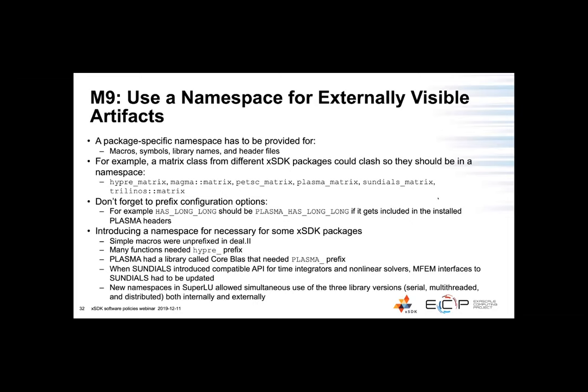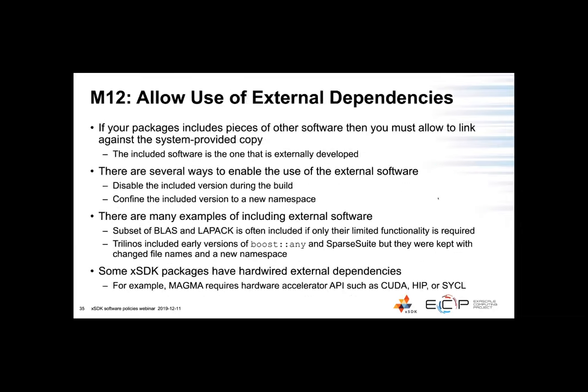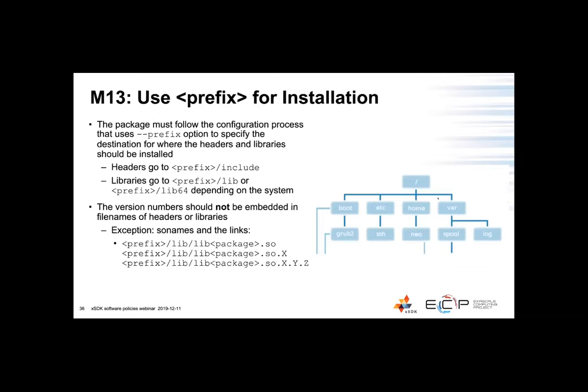A participant asked whether a central registry of prefixes has been considered — not that we know of, no. Regarding mandatory policy number thirteen (M13), there is a CMake equivalent of the prefix option that directs files to a specific location — the details can be looked up in the XSDK packages documentation. We can add the details to the sanitized question and answer document afterwards.